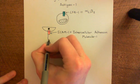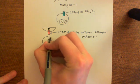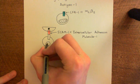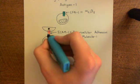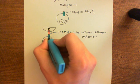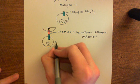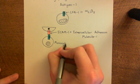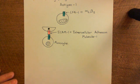The LFA-1 integrin on the monocyte's surface binds to ICAM-1 on the activated endothelial cell. This tethers the monocyte to the endothelium, promoting diapedesis of the monocyte across the endothelium. Once in the interstitial space, the monocyte differentiates into a macrophage.